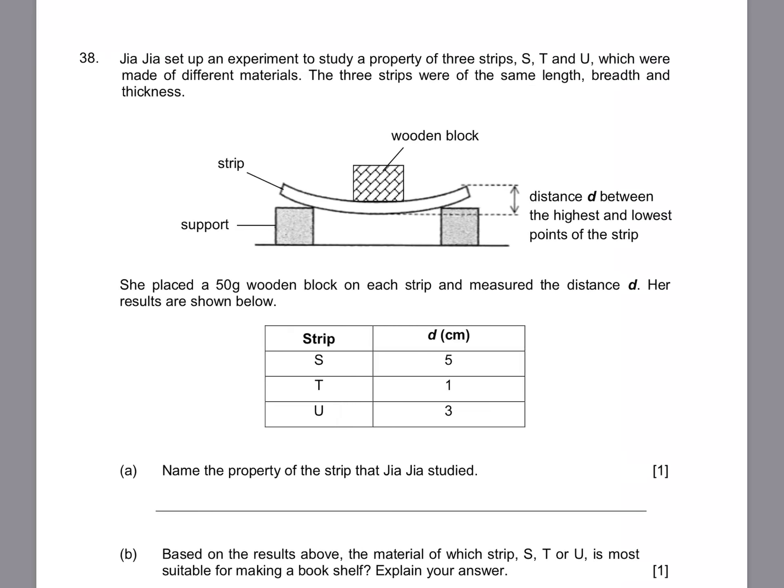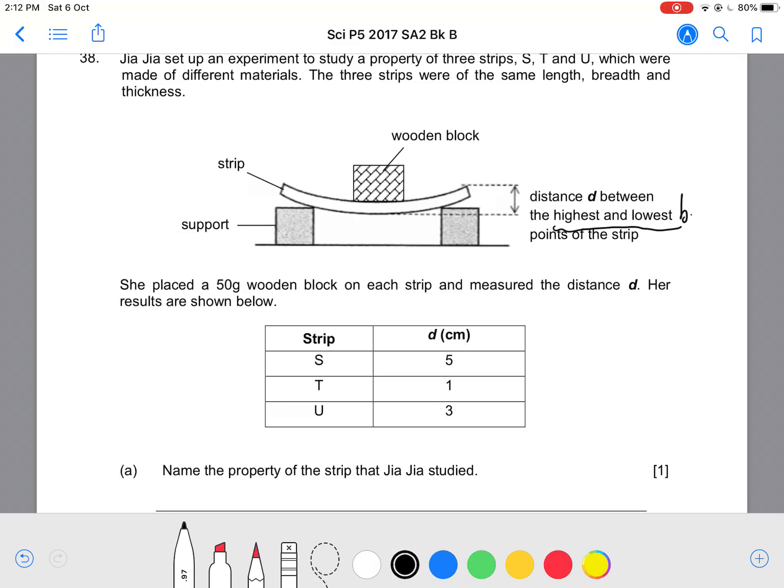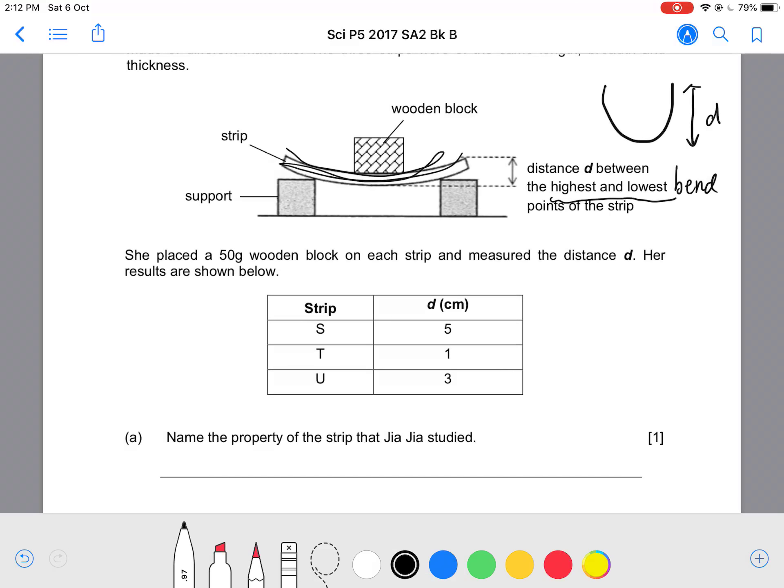Question 38. Jia Jia set up an experiment. Three different materials measured the distance where it started to bend. Of course, the more you bend, the distance gets even longer. So what do you think the property was trying to test for? Easy, flexibility, because talking about how much it can bend. But if you remember previous practice, we talked about something about the rubber band before it starts to break. That is not flexibility. That is about strength.